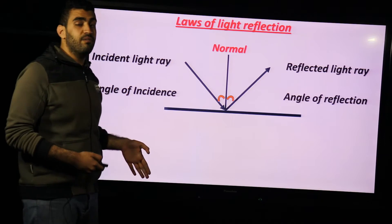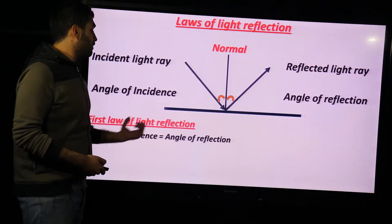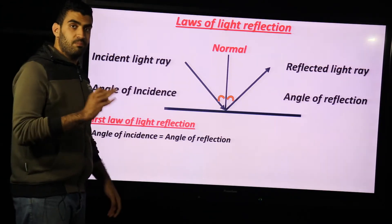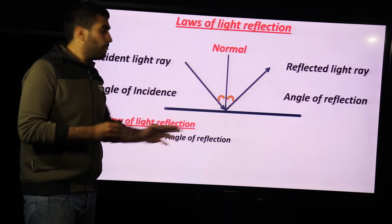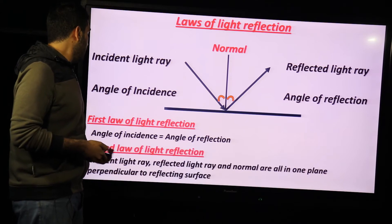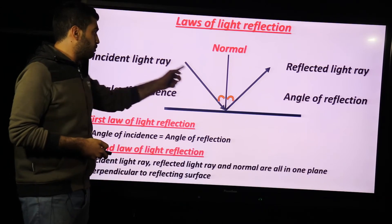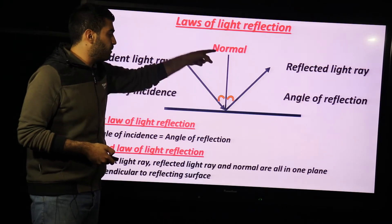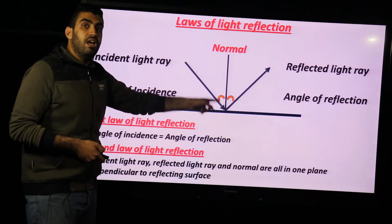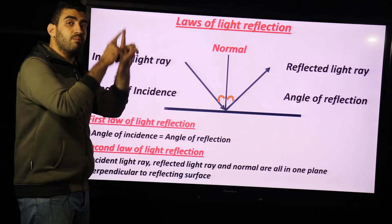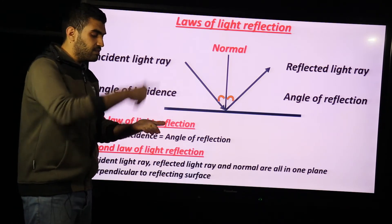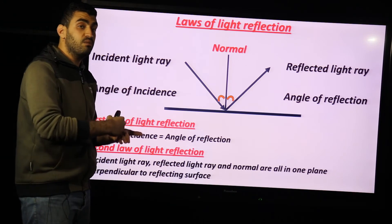The first law of light reflection: the angle of incidence is always equal to the angle of reflection. So if one angle is 40 degrees, the other must also be 40 degrees. The second law states that the incident light ray, the reflected light ray, and the normal from the point of incidence are all in one plane, which is perpendicular to the reflecting surface.